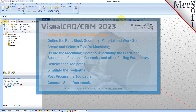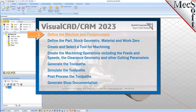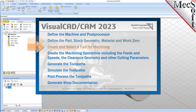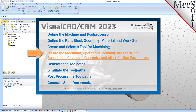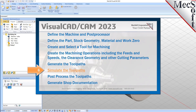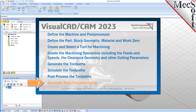We will perform the following basic steps in machining this model. First, we will define the machine and the post processor to use. Then we will define the part and the stock geometry, material, and work zero. Then we'll create and select a tool to use for machining. We'll create the machining operations, including the feeds, speeds, the clearance geometry, and other cutting parameters. Then we'll generate the toolpaths, simulate the toolpaths, post-process the toolpaths, and then generate shop documentation.